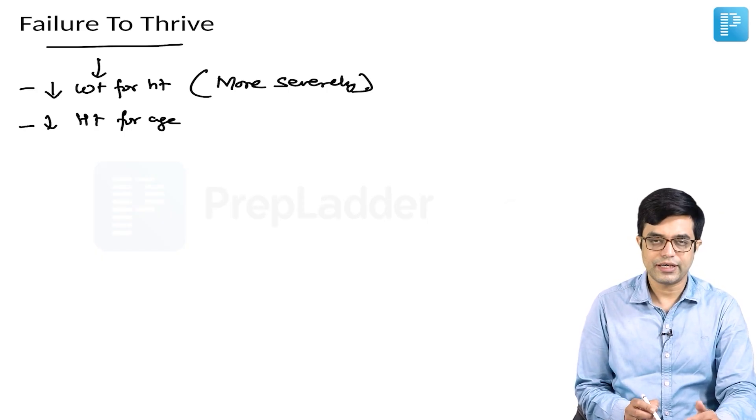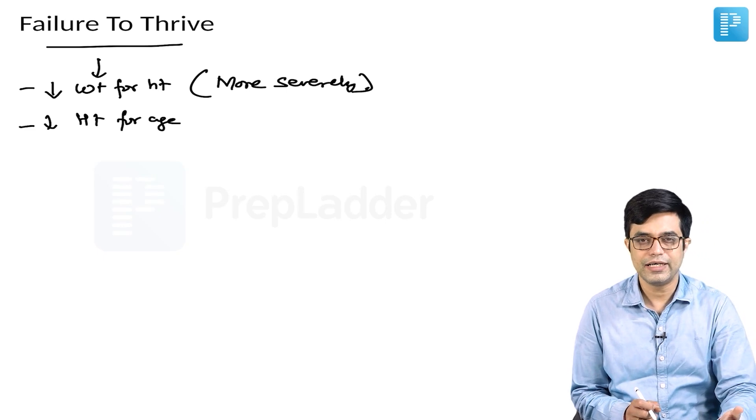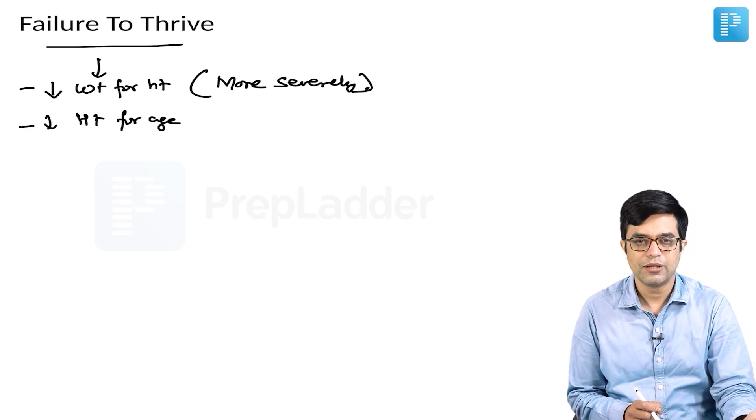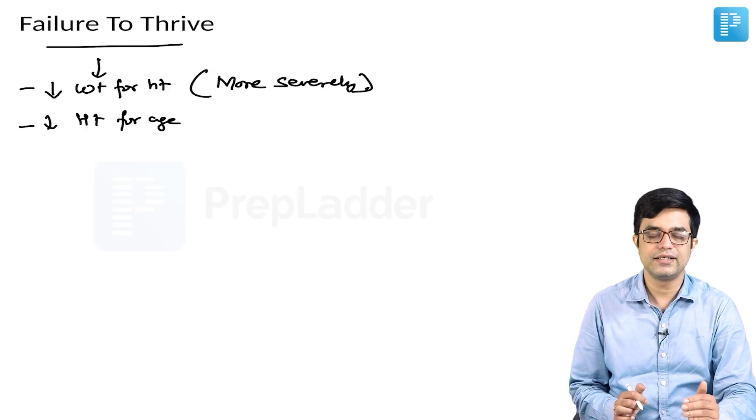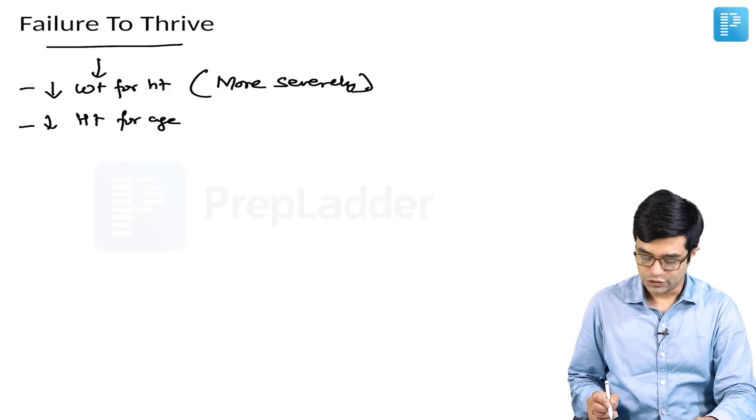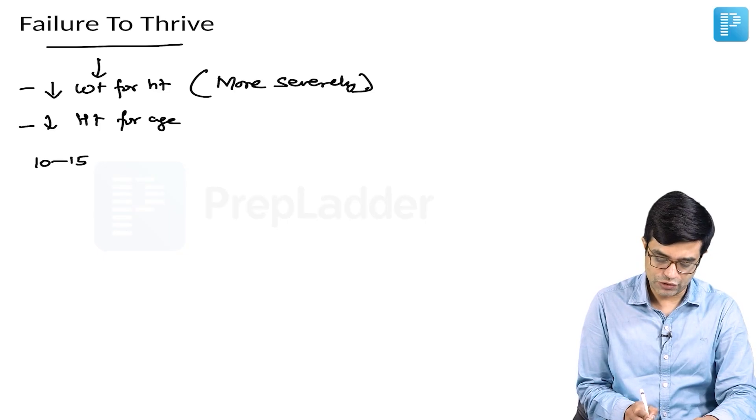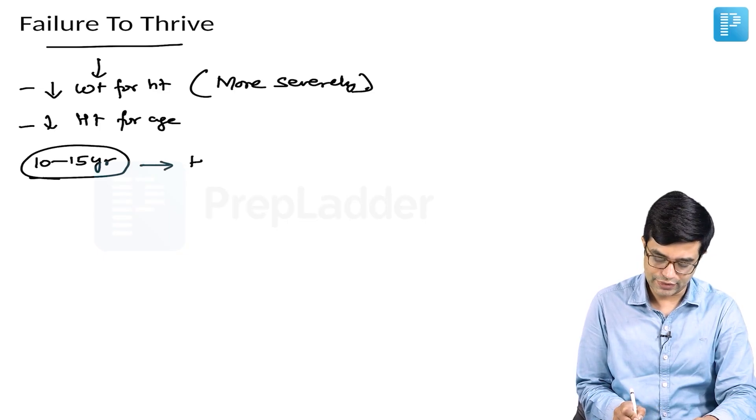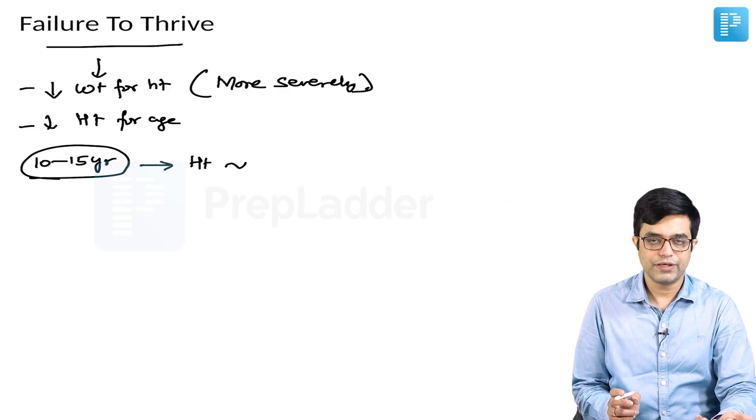These children usually tend to, at birth, have overall weight and height that may be borderline normal to low. But as age advances, the increase in height and weight tends to fall down. So much so that between the age of 10 to 15 years, their height is usually significantly below expected.